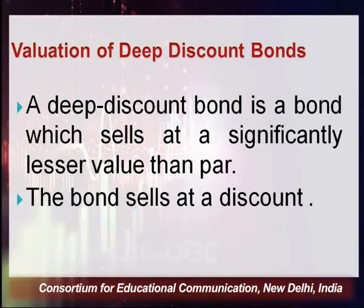The term itself explains what a deep discount bond is — 'deep' means the magnitude of discount is supposed to be greater. A deep discount bond is one that sells at a significantly lesser value than the par value. For example, if the par value of a bond is 6,000 rupees and it is sold to you at 1,000 rupees, the extent of discount is 5,000 rupees, which is very significant.